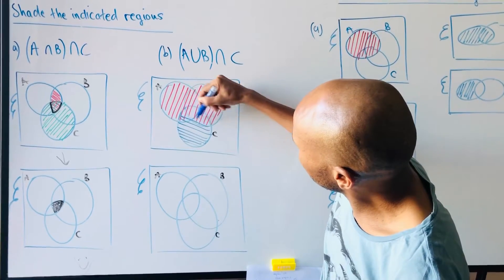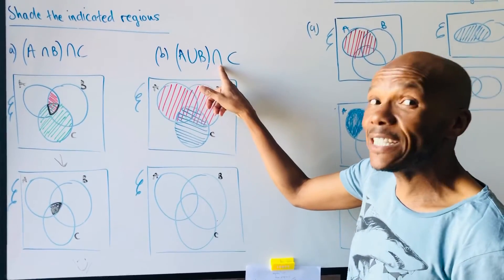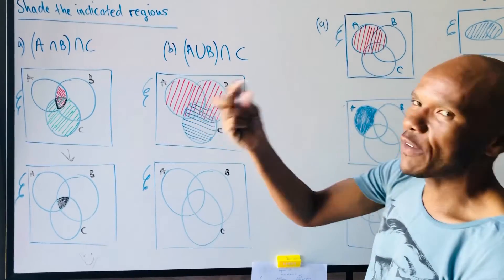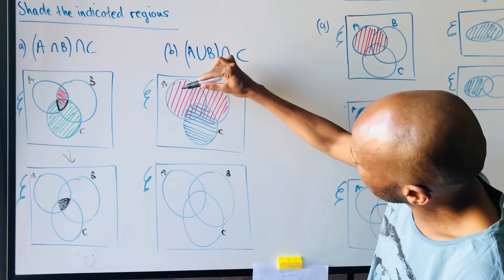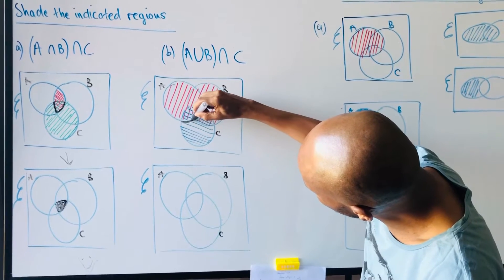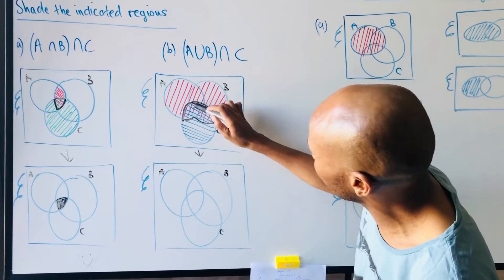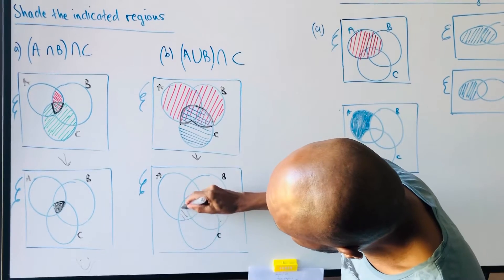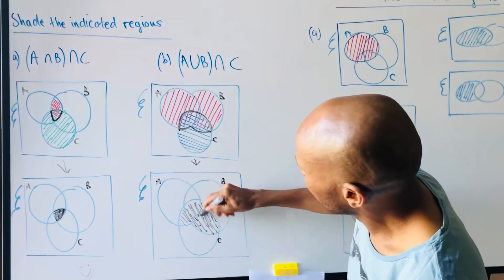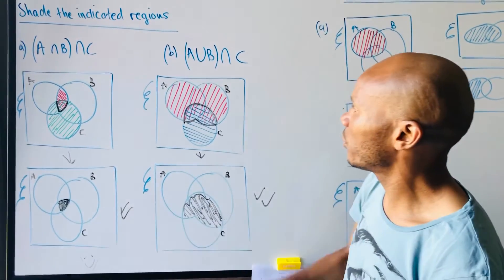Now I look at the sign — it says intersection — so the intersection part is where you find both lines. Here it's red, red, red — but these are three regions. I enclose them with a different color and bring it down. These regions here are your answer — not the working diagram.